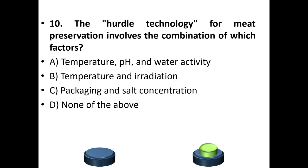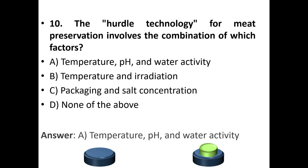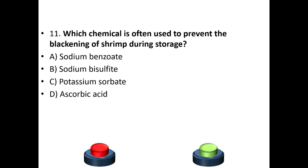Tenth question: Hurdle technology for meat preservation involves the combination of which factors? A) temperature, pH, and water activity, B) temperature and irradiation, C) packaging salt concentration, D) none of the above. The answer is option A — temperature, pH, and water activity.